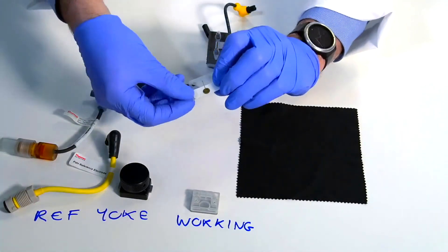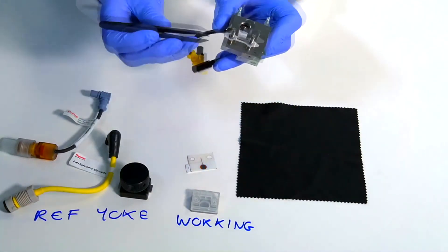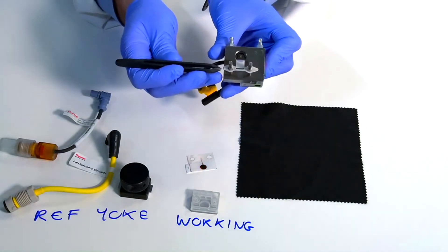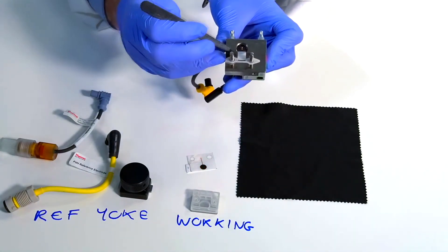In between the working electrode and the cell body we have a gasket. This gasket is what forms the actual cell volume itself, and you can kind of see the little slot there. That's where the sample flows.